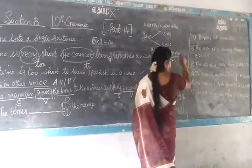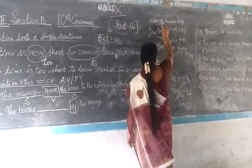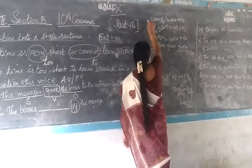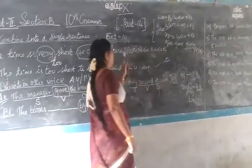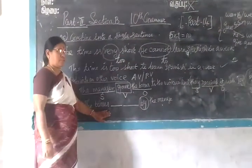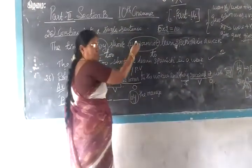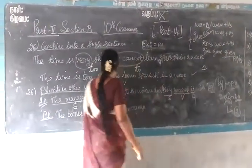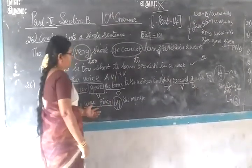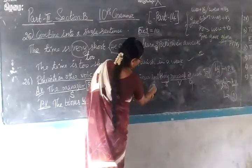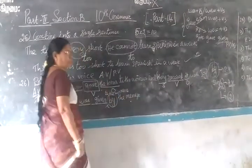So here we are using was + V3. 'Was' is used for singular subject and 'were' is used for plural subject. This is the boundary line you come to know through writing a passive voice sentence. Now to find: the subject is 'the bonus', which is singular. So you use 'was'. So you have written: 'The bonus was given to the worker by the manager.' That part is now complete.